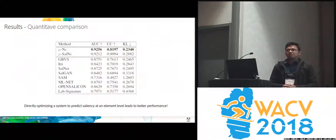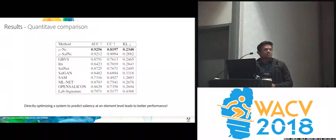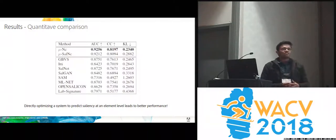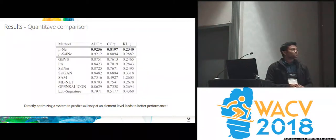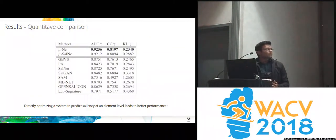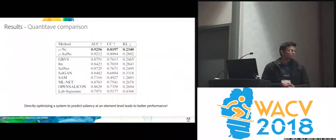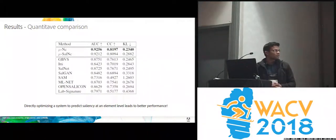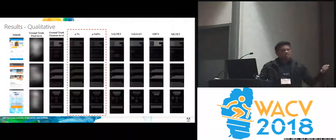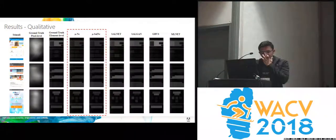We compared this method with many recent and well-known pixel-level saliency prediction methods. For the other pixel-level methods, we used a pre-trained model to get pixel-level saliency, then converted it to element-level saliency using the same procedure. Across a range of metrics, we have shown that directly optimizing the system to predict saliency at the element level leads to better performance. Here are some quantitative and qualitative results. Thank you, and hope to see you at the poster.